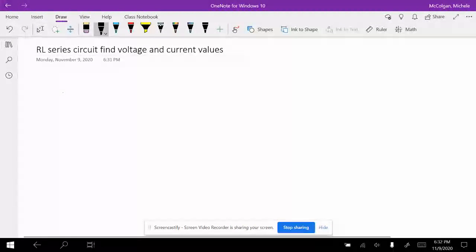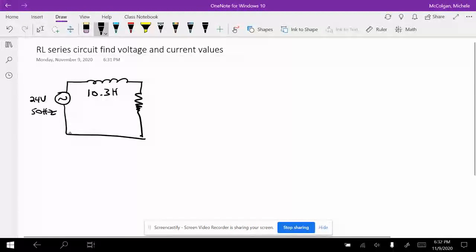So for this circuit, we have a time-varying signal. The voltage is 24 volts, the frequency is 50 hertz, and we have an inductor and a resistor. My inductor is 10.3 Henrys, and my resistor is 5k, 5 kilo ohms.